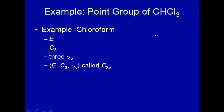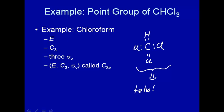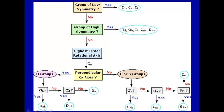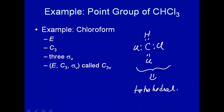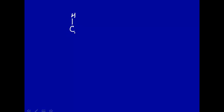Let's take an example: chloroform, CHCl3. We have to figure out its structure and see what symmetry elements it has. Carbon is the central atom with four electron pairs around it, all involved in bonding — one H and three Cl atoms. Four electron pairs implies a tetrahedral arrangement. We can draw it with H at the top and three Cl atoms as three legs on which carbon rests, with hydrogen sticking up.